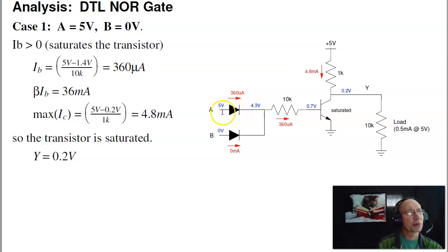In that case, diode A is turned on, and I've got one, two diodes in series with ground, so the 5 volts loses 1.4 volts. I've got 3.6 volts across 10k, giving you 360 microamps.